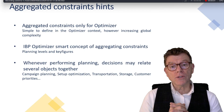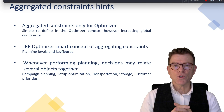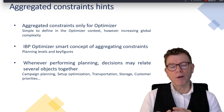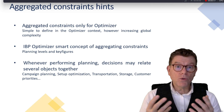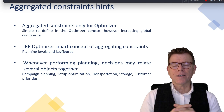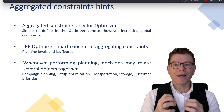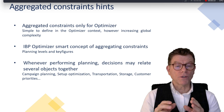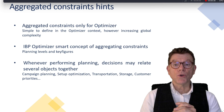The aggregated constraint concept is only available in the optimizer scenario. If you are running heuristics only, you cannot use it. This concept is based on additional planning levels and key figures, and it is quite smart. When do we need to call for this aggregated constraint scenario? Whenever you have to put several planning objects in relation together — like in campaign planning, production setup optimization, transportation scenarios, or managing customer priority. We'll have more detail about those use cases in the next slides.